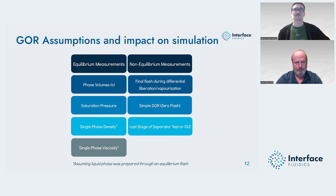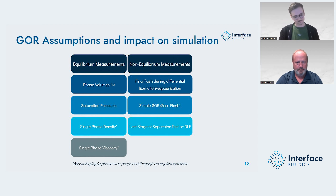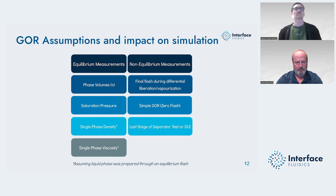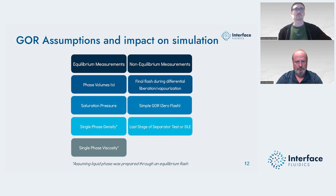The key takeaway for the average PVT report user is understanding which portions of your report are in equilibrium and which are non-equilibrium measurements. Phase volume percentages, saturation pressures, single-phase density, and single-phase viscosity — assuming they were prepared through an equilibrium flash — are your go-to data sets to attempt to match with your equation of state. If you're trying to match things like final flashes during differential liberations, simple GORs, last stages of separator tests or DLEs, there's potential for those to be in non-equilibrium stages if you're not paying attention.